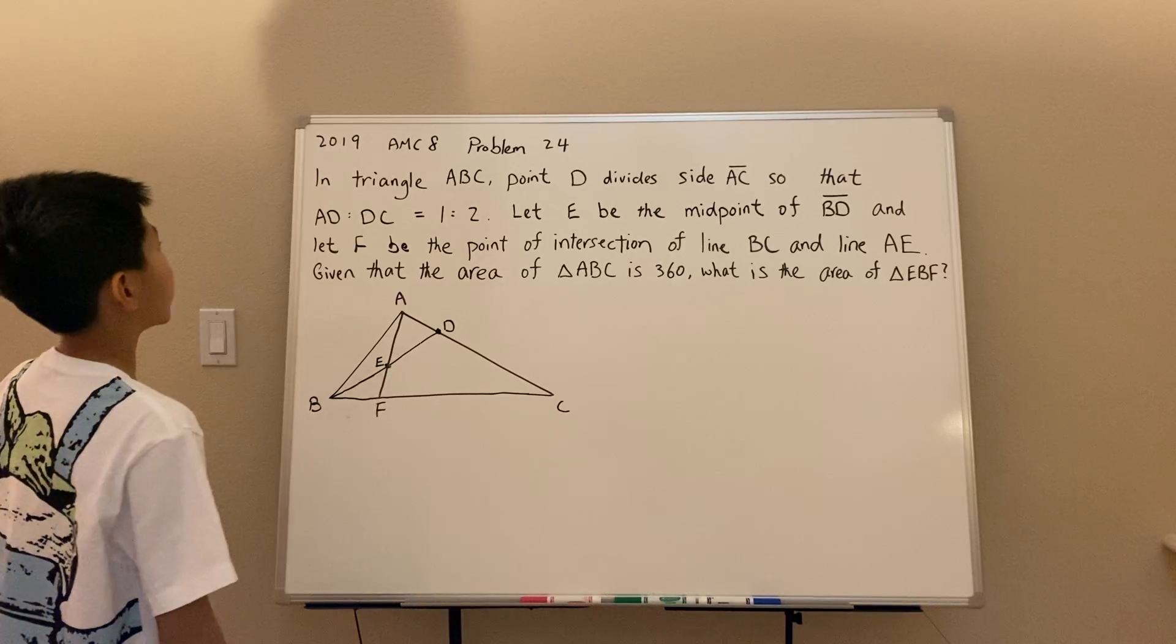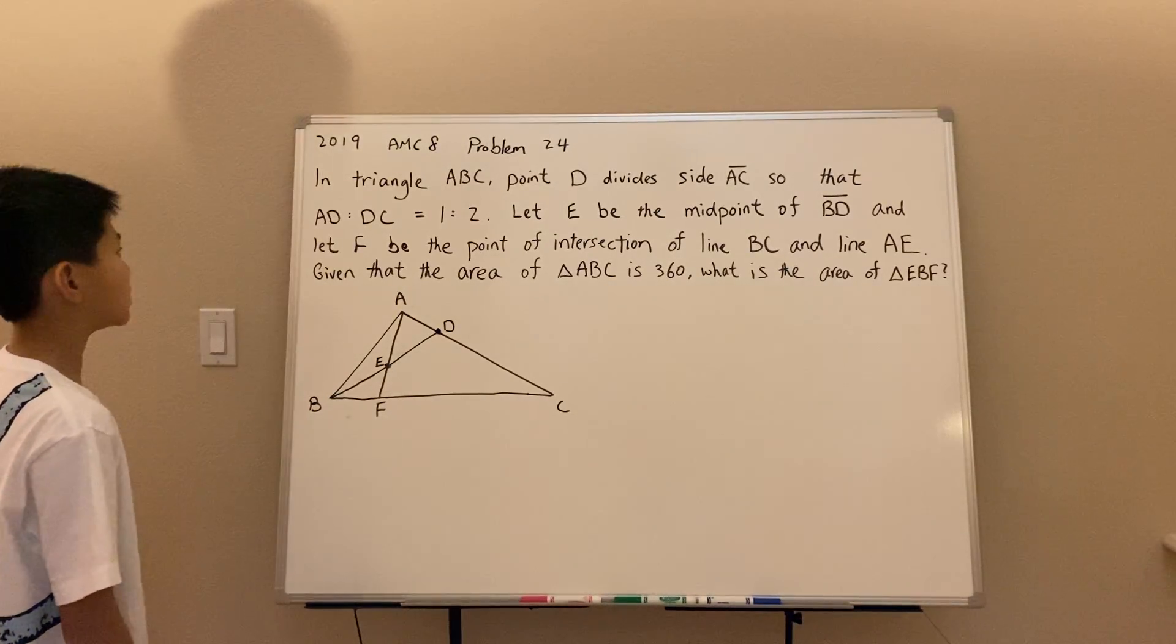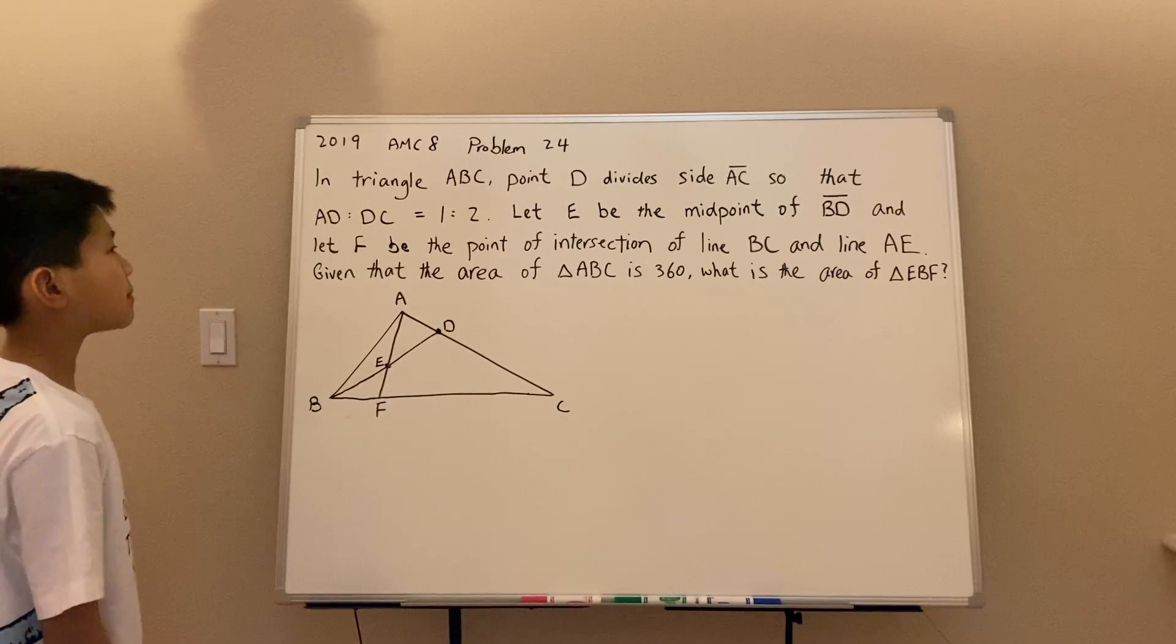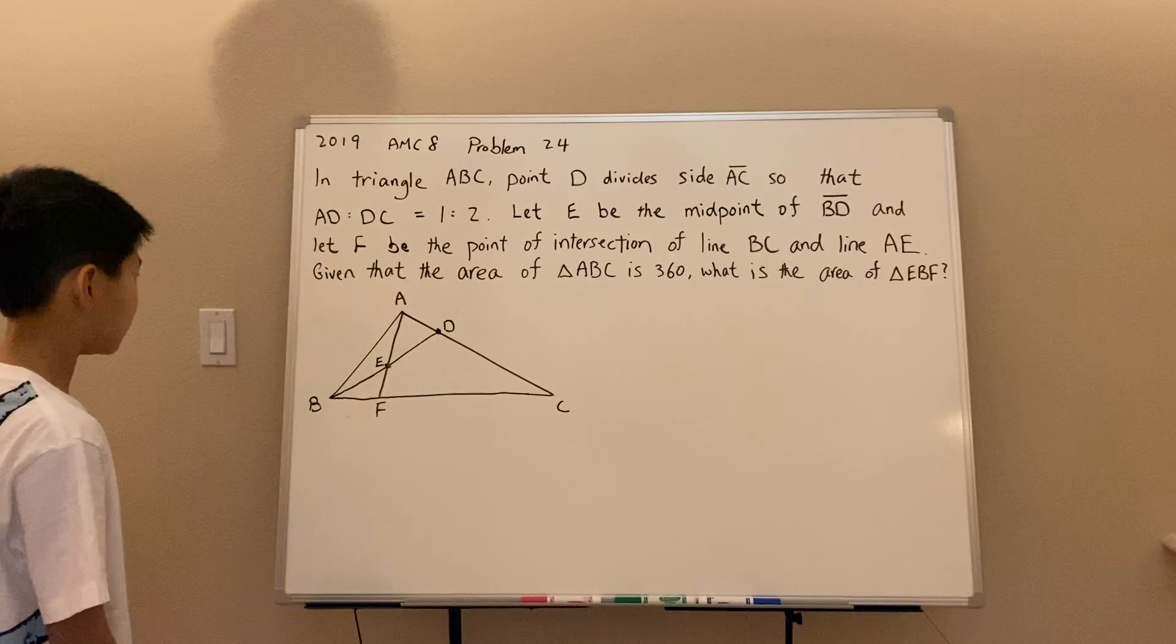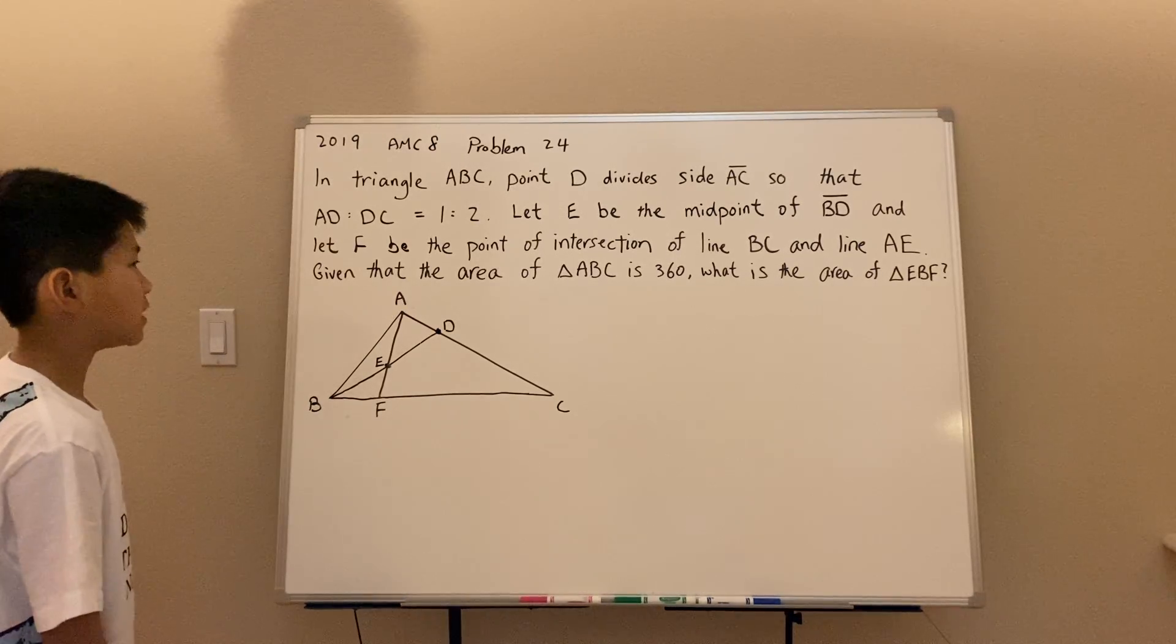The problem reads: In triangle ABC, point D divides side AC so that AD to DC is 1 to 2. Let E be the midpoint of BD, and let F be the point of intersection along BC and line AE. Given that the area of ABC is 360, what is the area of EBF?